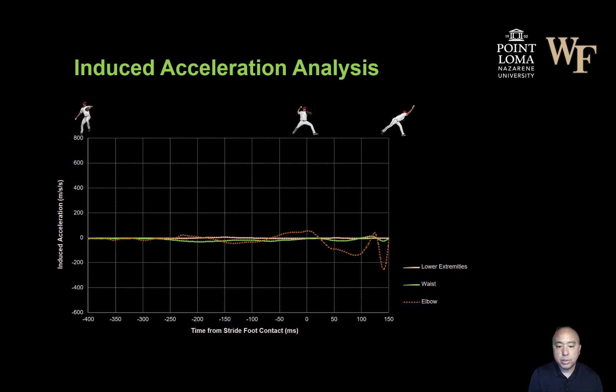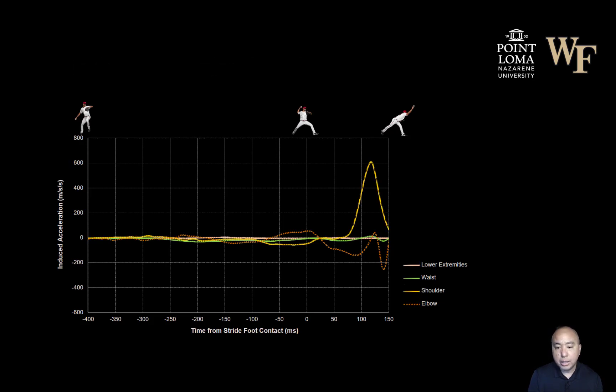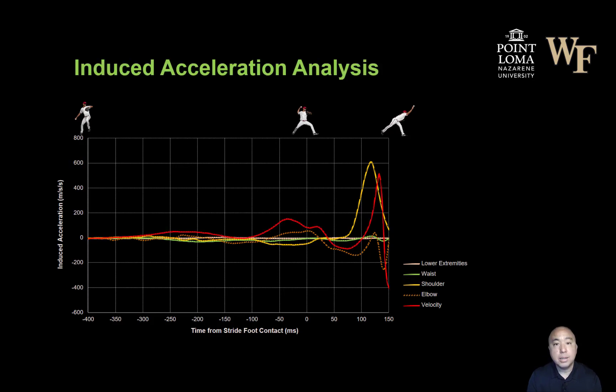I started with these three just to illustrate how little contribution these components have to the acceleration induced at the throwing arm. And then you look at the shoulder, as expected the shoulder torque directly contributes to acceleration of the throwing arm as you expect, and the velocity dependent torque.